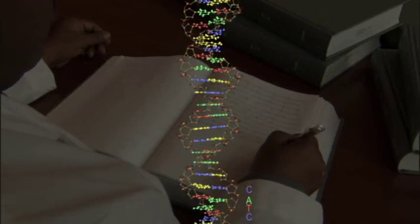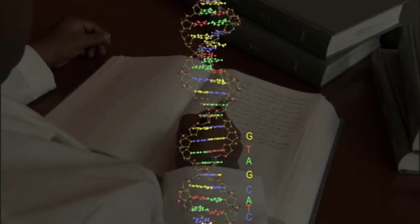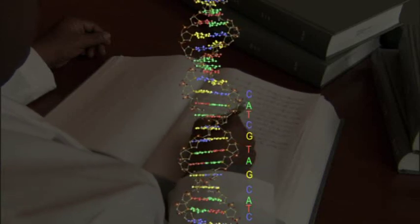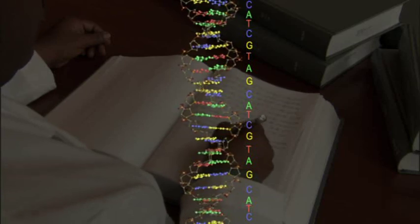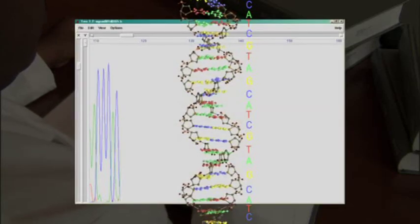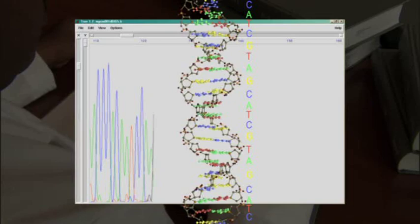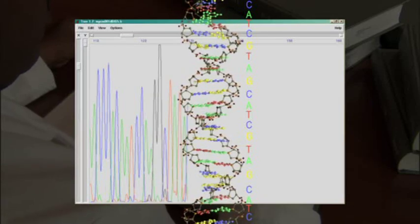Step by step, and 3 billion letters long, this is the formula for a human being. The existence of this tiny code written molecule by molecule inside each of our cells is a remarkable discovery all by itself.